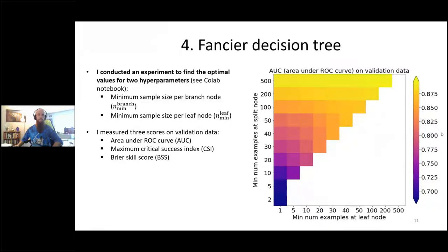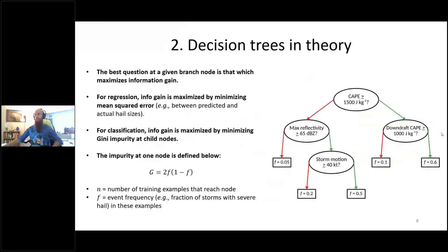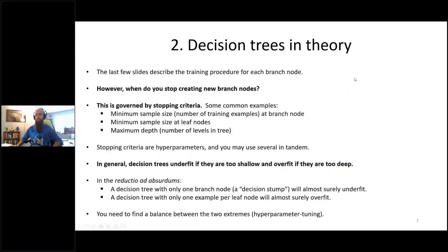Overfitting is an endemic problem with decision trees. When you train a single decision tree, they tend to overfit horribly because decision trees are really sensitive to thresholds. For example, two completely identical storms — one with CAPE of 1,499 J/kg and another with 1,501 J/kg — if sent down the decision tree, one could end up with a forecast probability of 5% and the other with 60%. These precise thresholds make decision trees unstable and prone to overfitting.